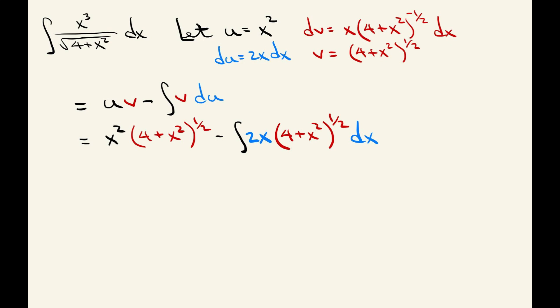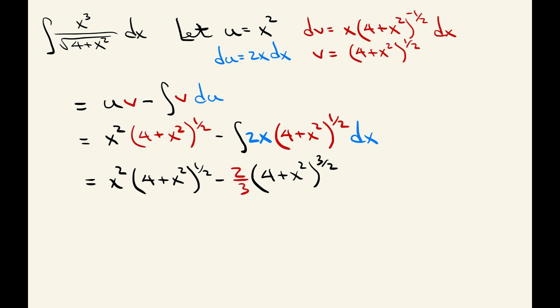So this equals x squared times 4 plus x squared to the one-half, minus the integral we now need to evaluate. Since it involves 4 plus x squared to the one-half, we can be pretty sure that 4 plus x squared to the three-halves power is going to be part of our answer. Differentiating that gives three-halves times 4 plus x squared to the one-half times 2x by the chain rule, which gives us the 2x we need. We then fix up the three-halves factor by multiplying by two-thirds, giving us the integral we're looking for.